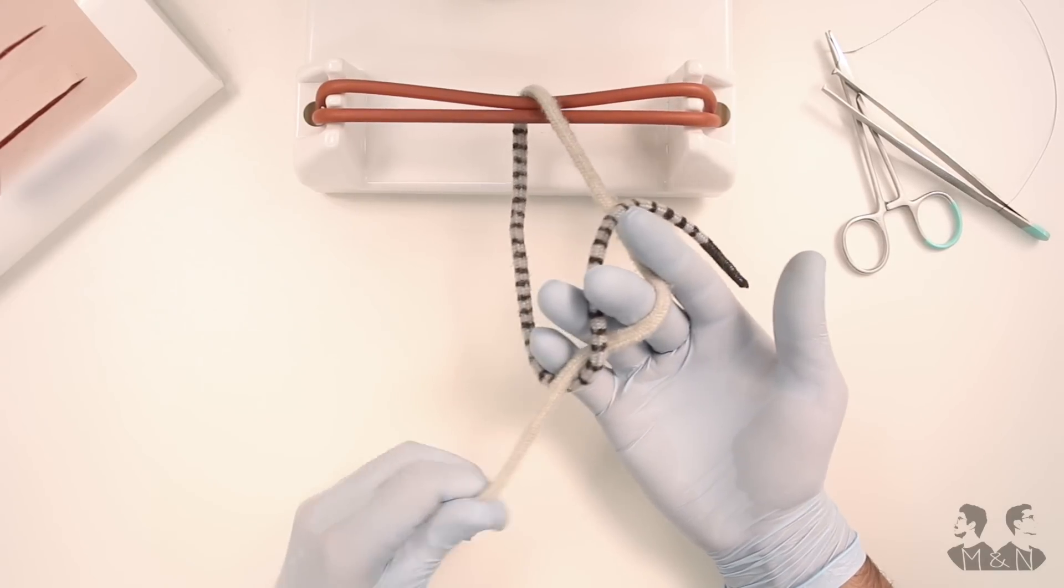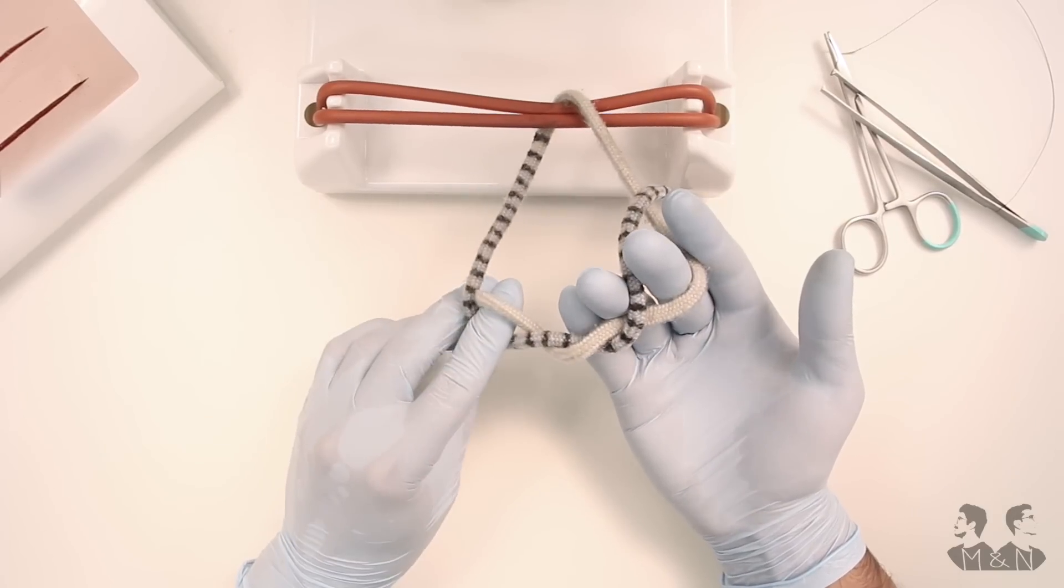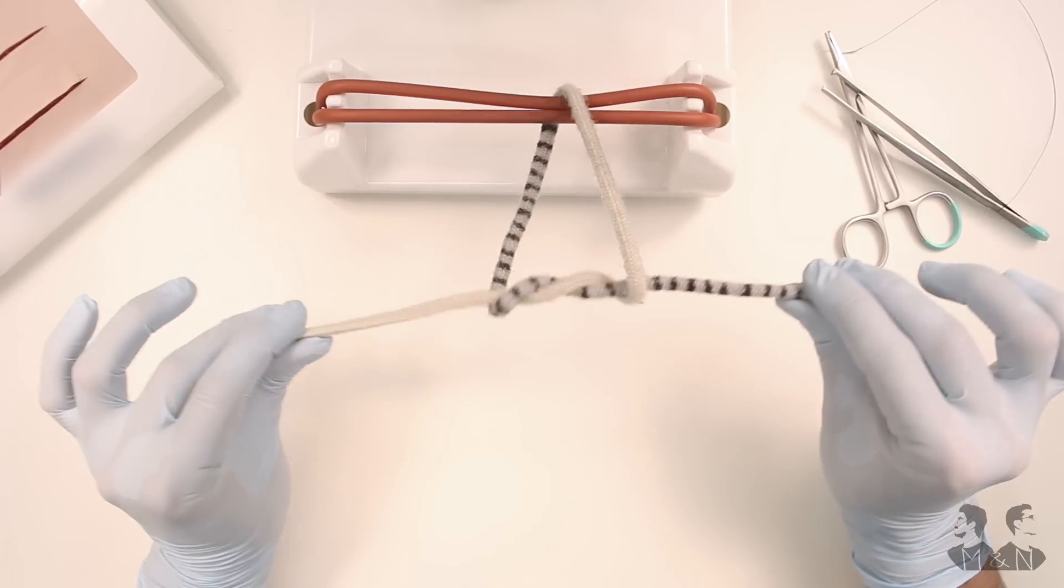Instead, the index finger of your left hand grabs for the basis of the striped end. Now, you wrap this one around the white end, which is still located in your left hand.